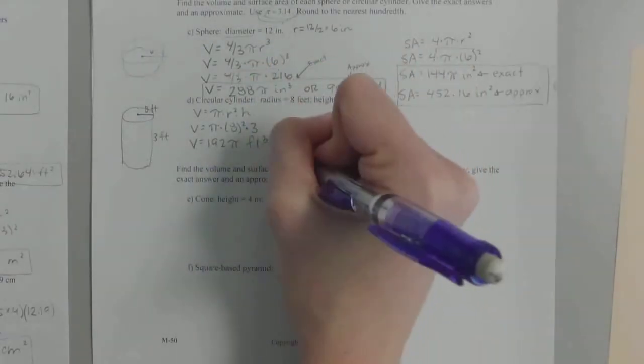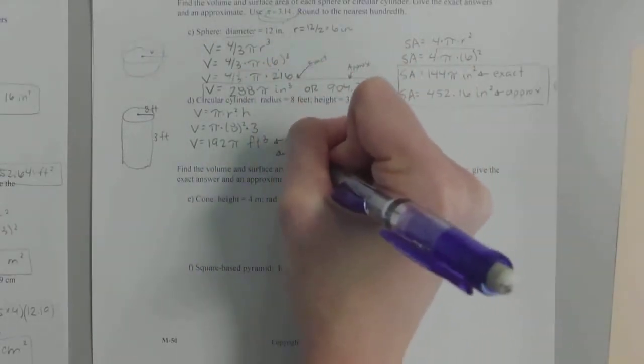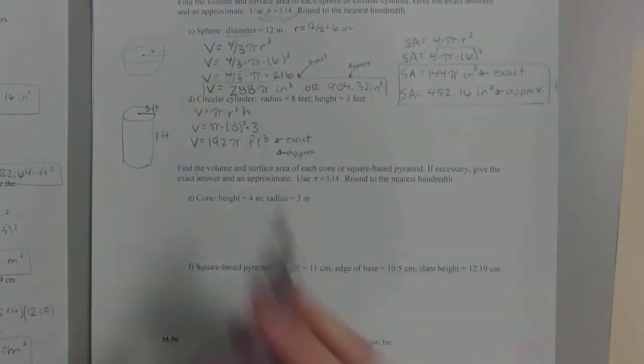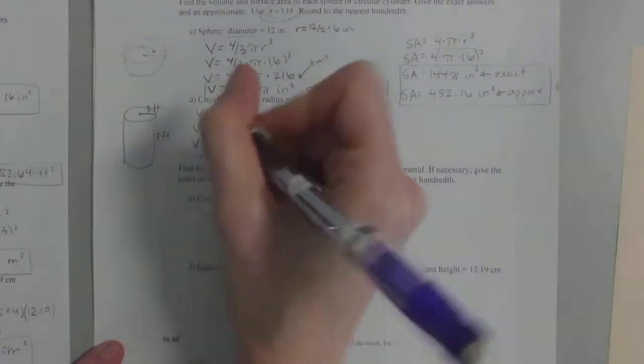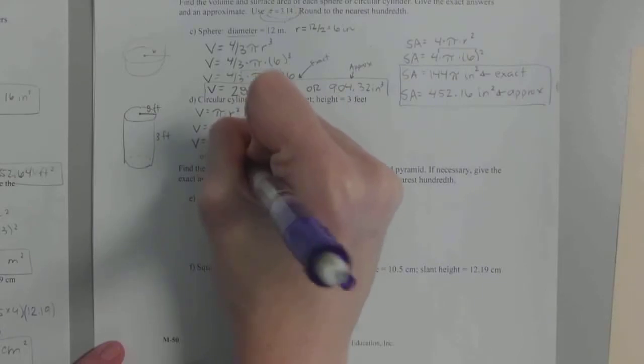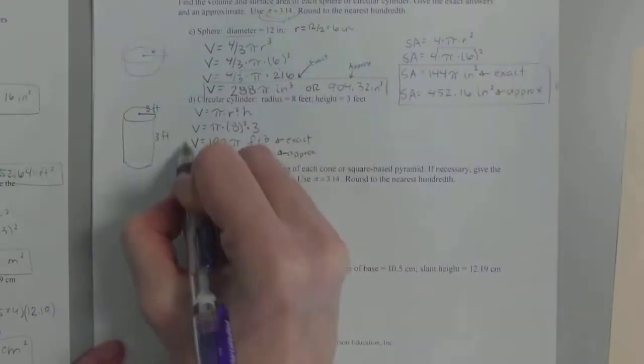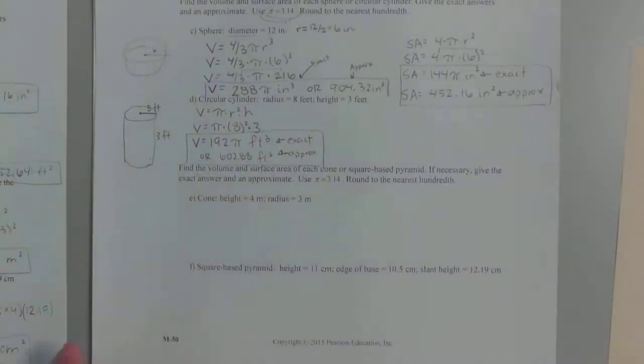And then how am I going to go from the exact to the approximate? You got it. I'm just going to turn the pi to that 3.14. So I'm just going to take 192 times 3.14 and round it to two decimal places. You get 602.88. Does that look right? Feet cubed. So MyMathLab will have two spots for you. It will be one problem and it will give you the radius and the height.